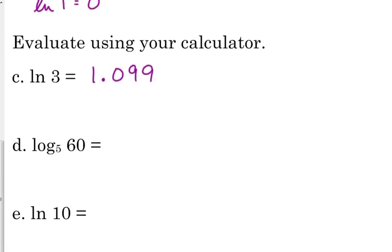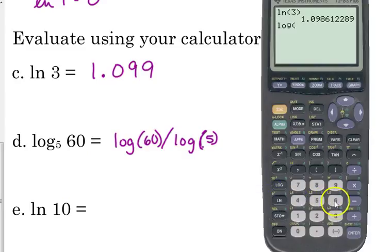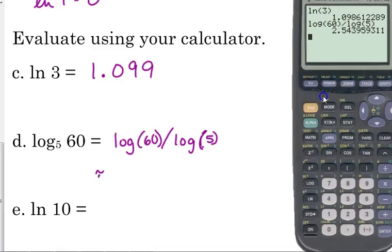I threw the next one in there just to make sure that we're not forgetting all the things that we've done so far. Log base 5 of 60. To do that in our calculator, that would be the log of 60 divided by the log of 5. We have to use the change of base. Not forgetting to close our parentheses. The log of 60, close parentheses, divided by the log of 5.